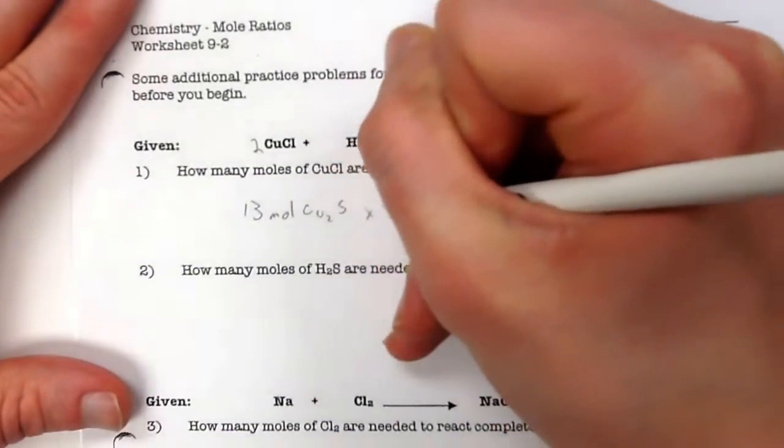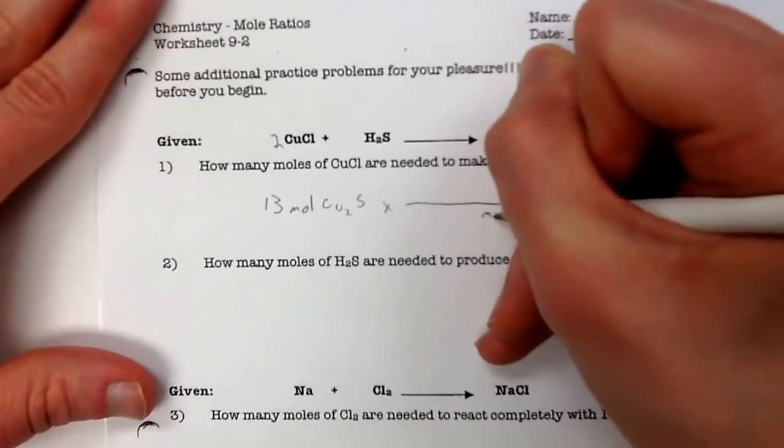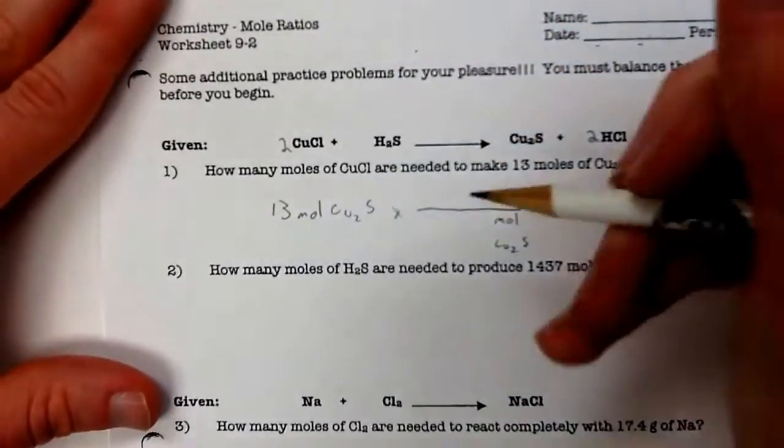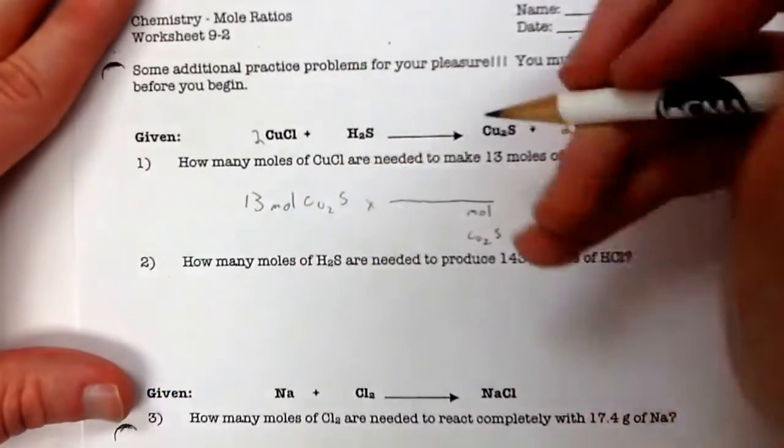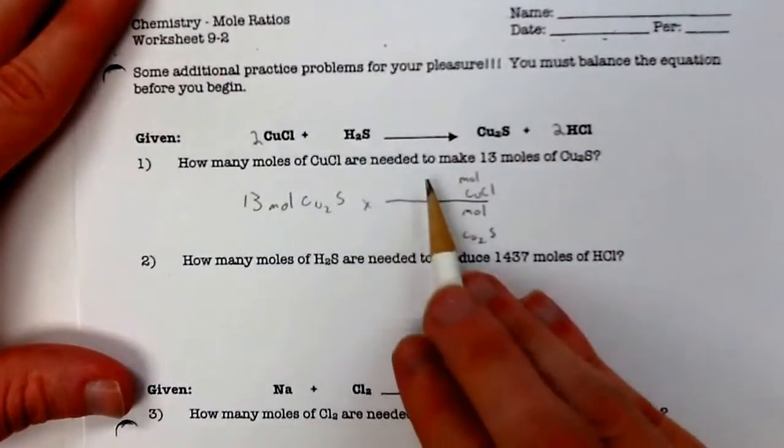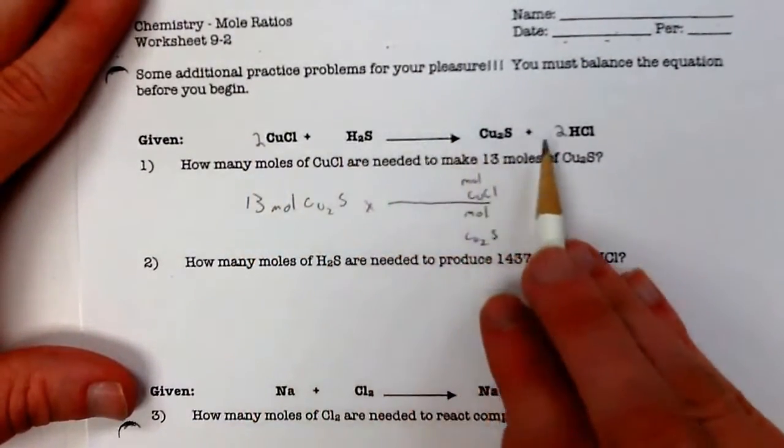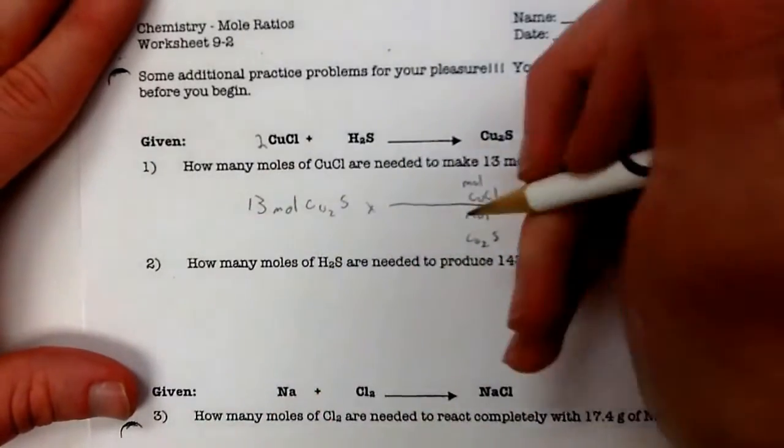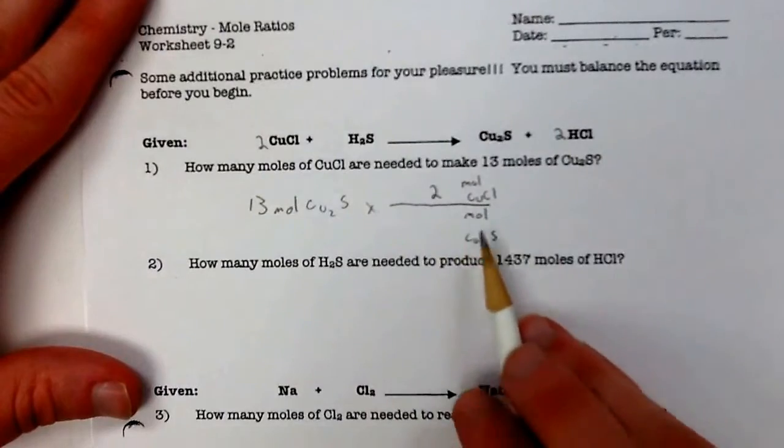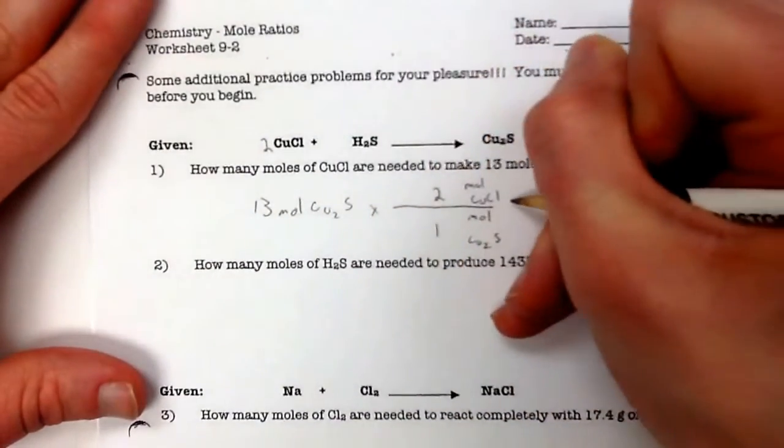So I do my times, goes into, I drop my label down, mole of Cu2S, and we're going to moles of CuCl. Now the numbers that I get from here, I'm simply looking at the coefficients from my balanced equation. So CuCl is a two, and Cu2S, there's nothing there, but that means it's a one.